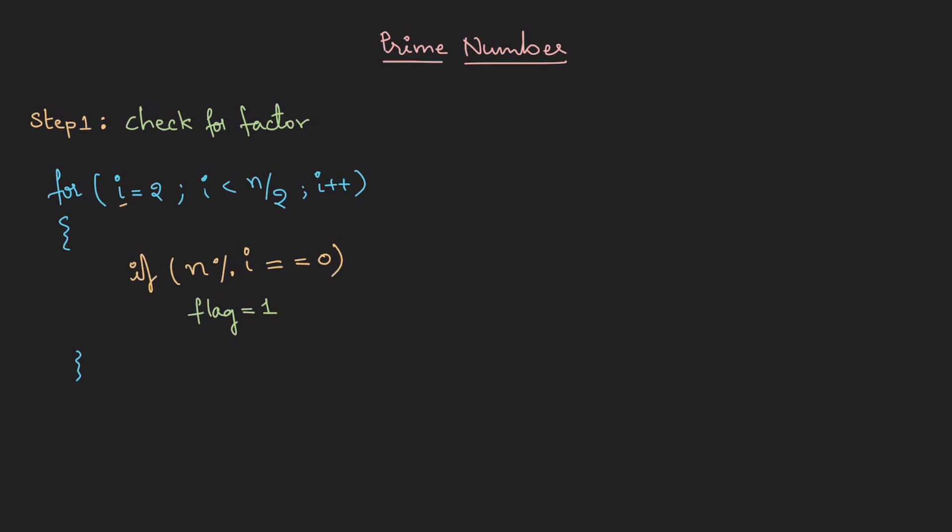So initially the flag will be 0. Once the loop exits, we go for step 2. Step 2 is check for the flag. One very important thing here: we have taken i as 2, so sometimes the user might give n as 1. If n is 1, we're going to print it as neither prime nor composite. Else, if other than 1, if it is any other number, we'll check for the flag. If the flag equals 1, it means that it's not a prime number, therefore we'll print it as composite. Else we're going to print it as prime.